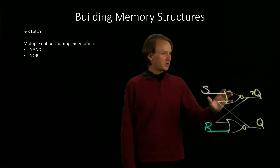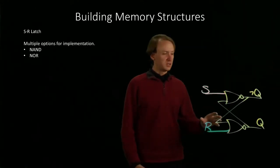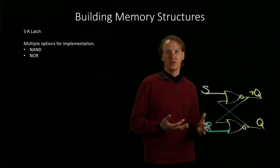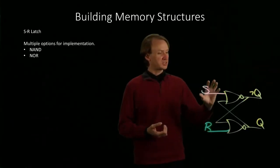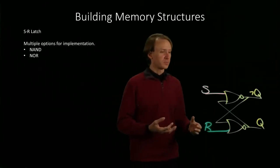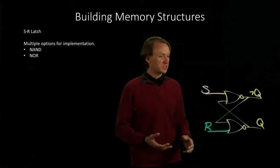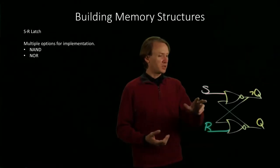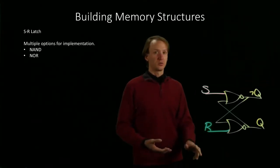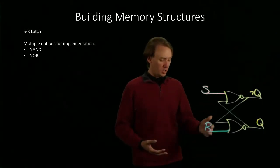So our SR latch starts out in an unreliable state. When we first initialize this, it's not going to have any meaningful value in it. We have to actually set the state of the SR latch before we can do anything with it. And in this case, we set the state by either asserting the S line or the R line. We don't want to assert both at once.